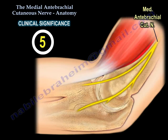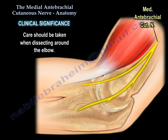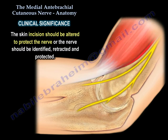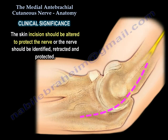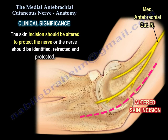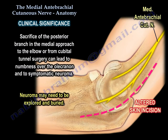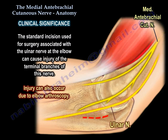Clinical Significance #5: Care should be taken when dissecting around the elbow. The skin incision should be altered to protect this nerve; otherwise, the nerve should be identified, retracted, and protected. Sacrifice of the posterior branch in the medial approach to the elbow or from cubital tunnel surgery can lead to numbness over the ulnar nerve and to asymptomatic neuroma. Neuroma may need to be explored and buried. The standard incision for ulnar nerve surgery at the elbow can injure terminal branches of the nerve, and this can also occur from elbow arthroscopy.